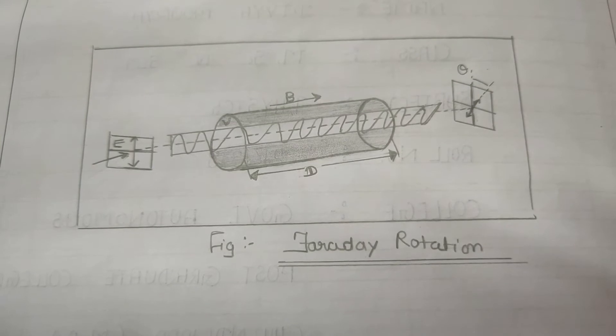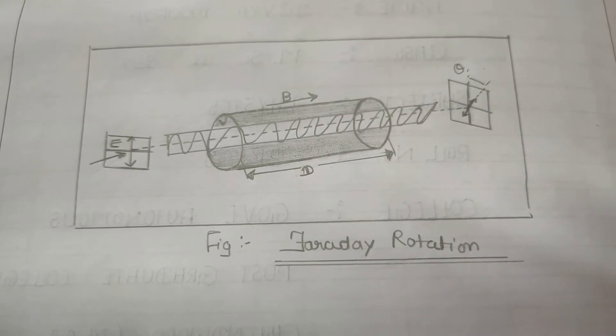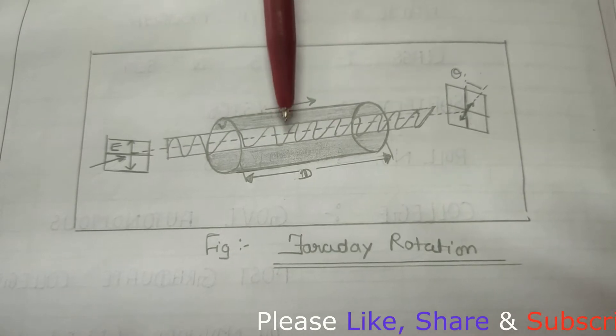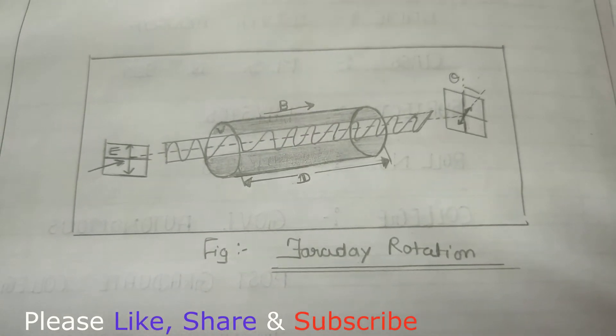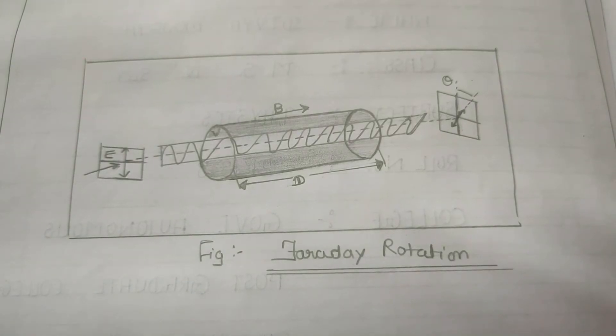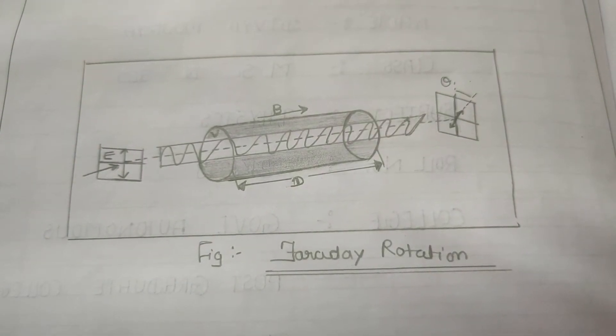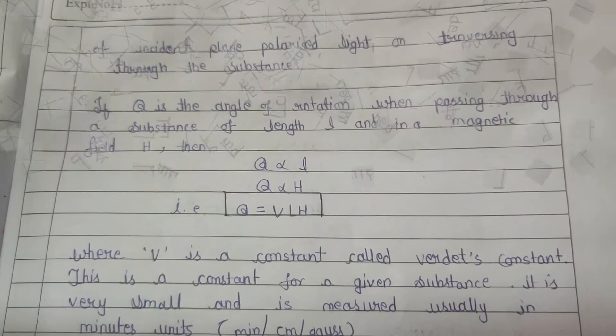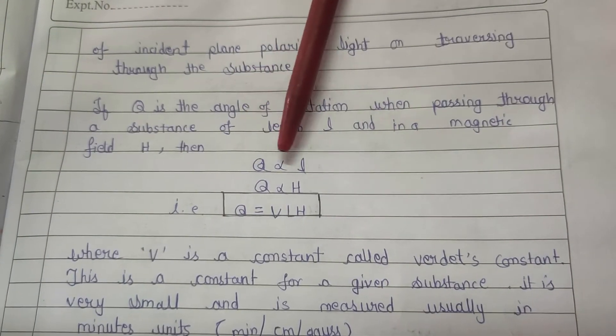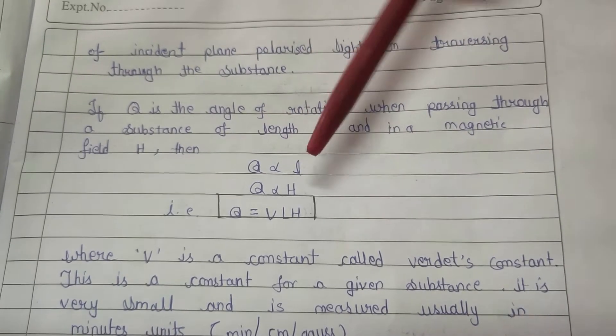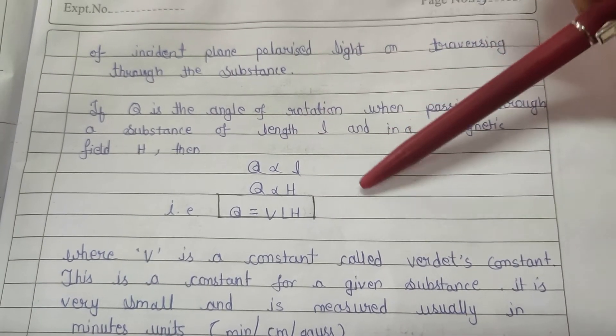Now let's understand the theory. When the light propagates in a magnetic field through an optically active substance, its vibrational plane will rotate from its own angle. We denote this angle as θ. The θ is proportional to the substance length, which we denote as L, and θ is proportional to the magnetic field.